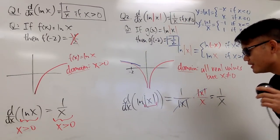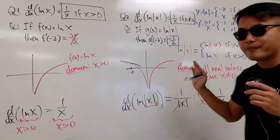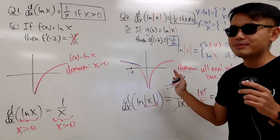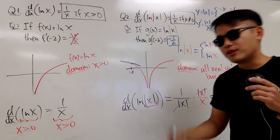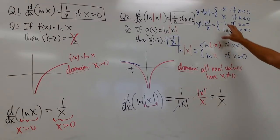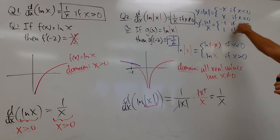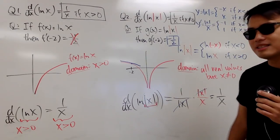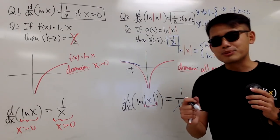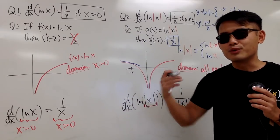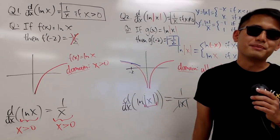Hopefully this helps clarify the difference. The derivative of ln x is 1 over x with x greater than 0, while the derivative of ln of absolute value of x is also 1 over x but x can be any nonzero number. I hope you guys liked this video. Please subscribe and share this video with your classmates, teacher, or whoever loves math.